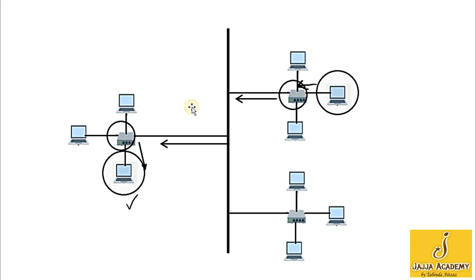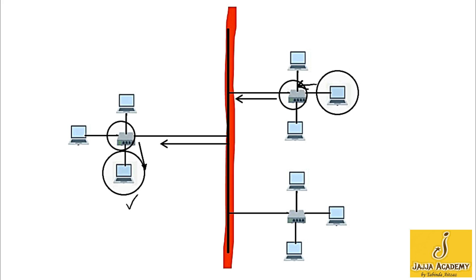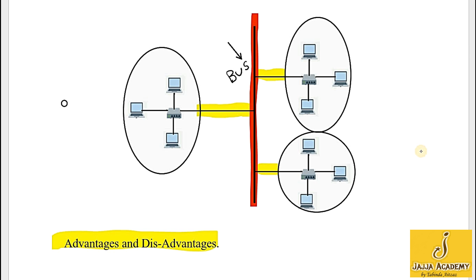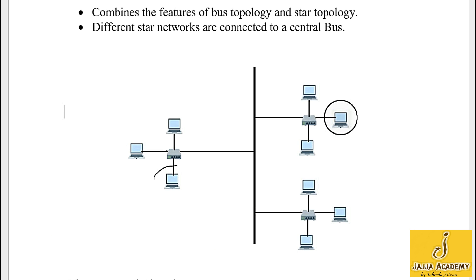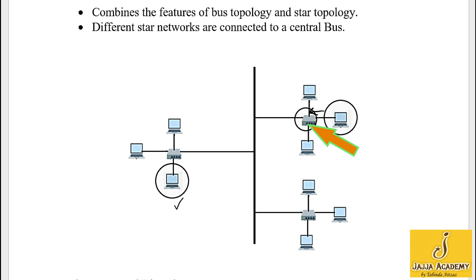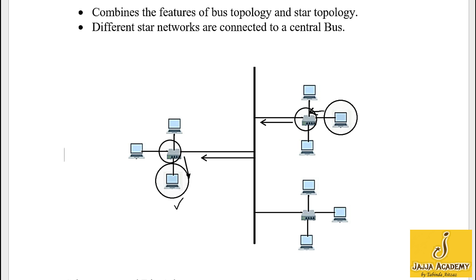The advantage of tree topology is it is very flexible — addition or removal of a computer or node in this network is very easy. The disadvantage is if the central bus fails, the whole network stops working. Now let's see the working of tree topology: a computer sends its message along with the destination address to its central device, which forwards the message to the central bus, the bus moves the message to the relevant star network, and the central device of that star network forwards the message to the destination computer.